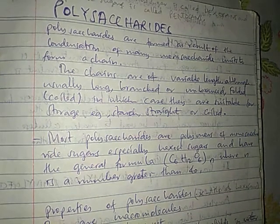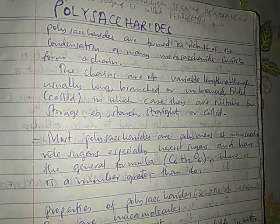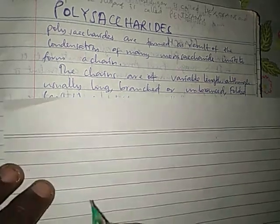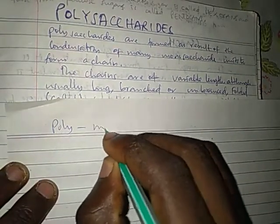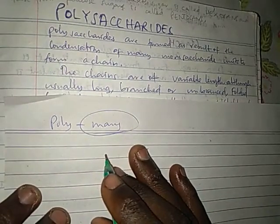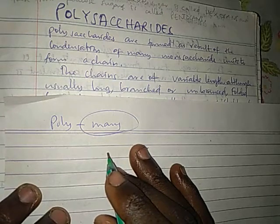Welcome back friends. In this video we shall discuss about polysaccharides, as we discussed about disaccharides in the previous videos. This is a continuation of the lecture. As the word suggests, poly means many and saccharides means units. So polysaccharides are formed as the result of the condensation of many monosaccharide units to form a chain.